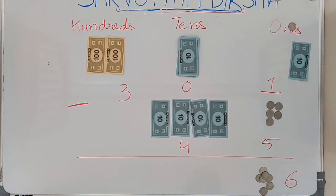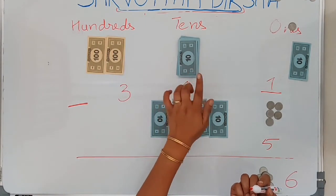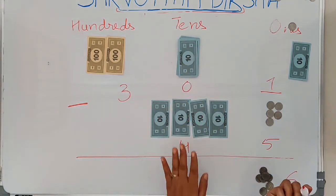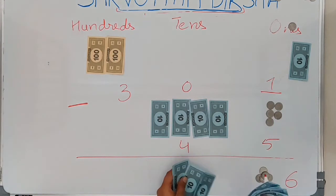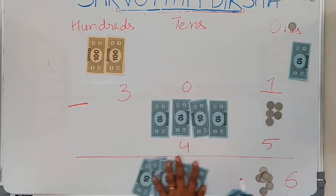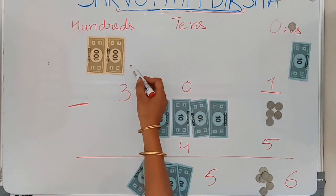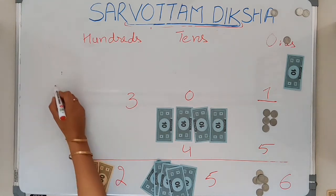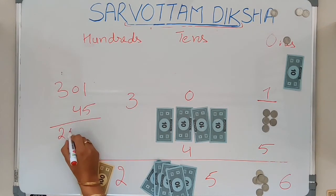When I take away 5 ones from the 11 ones available, I will be left with 6 ones. Here I got 10 tens from the hundreds place. I sent 1 ten to the ones place, so how many tens are left? 9 tens. From 9 tens I have to take away 4 tens, leaving me with 5 tens. And for the hundreds, 300 was present and I took away 100, leaving behind 200 only. Hence when I subtract 45 from 301, I get 256.